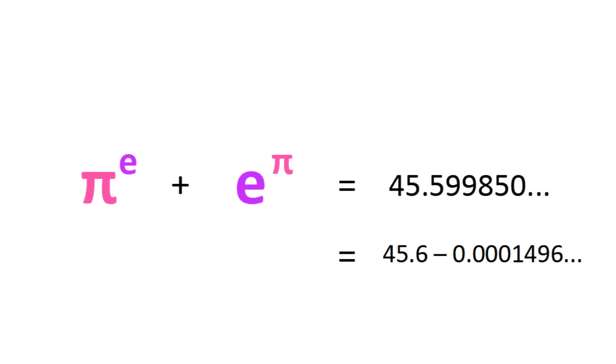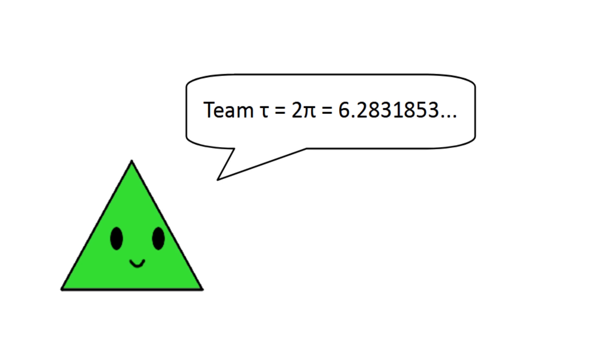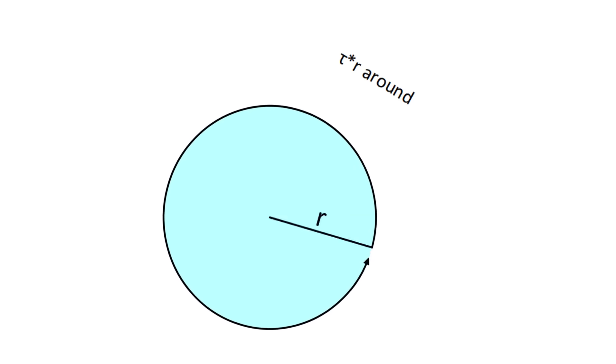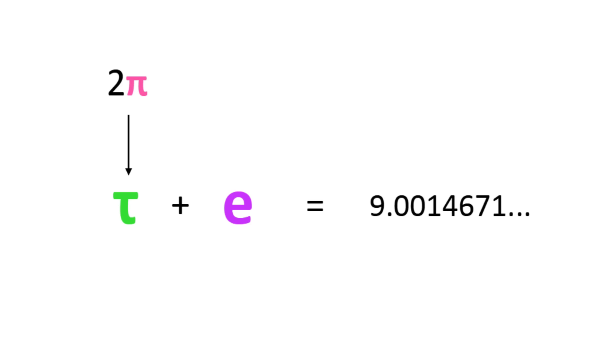Well, some people prefer a different circle constant. Tau equals 2 pi, and is the number of radians in a circle. If you add that to e, you get another almost integer, 9.001.